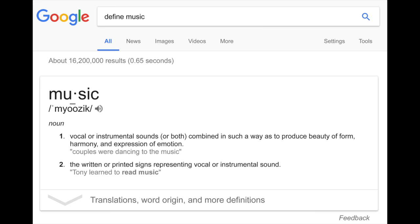So what is music? It's pretty hard to define. Google says music is vocal or instrumental sounds, or both, combined in such a way as to produce beauty of form, harmony, and expression of emotion.